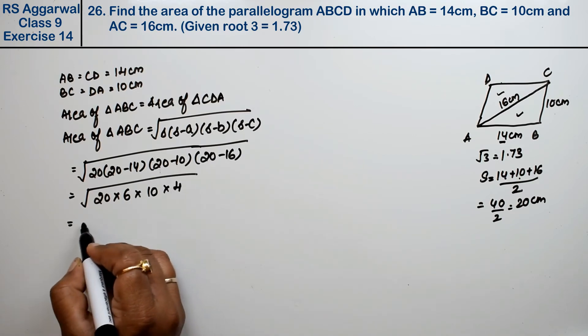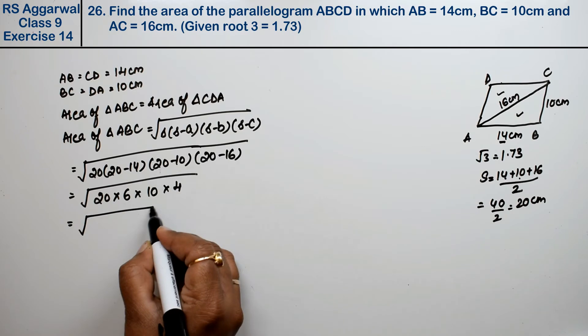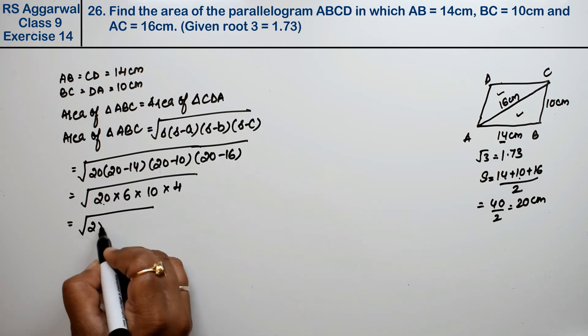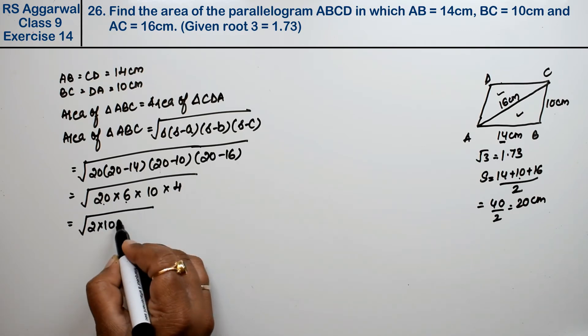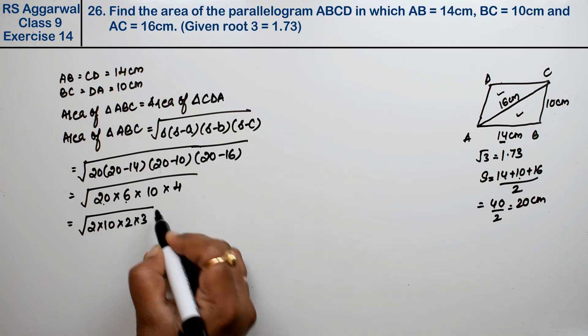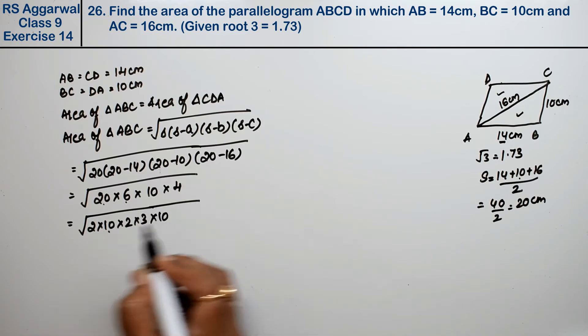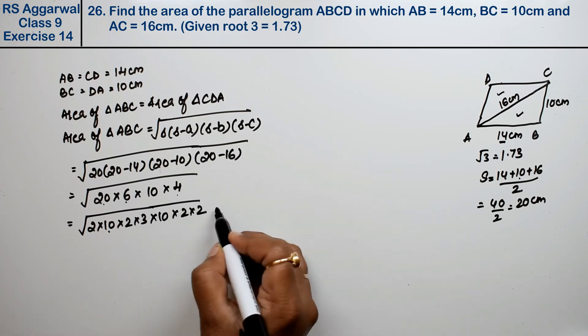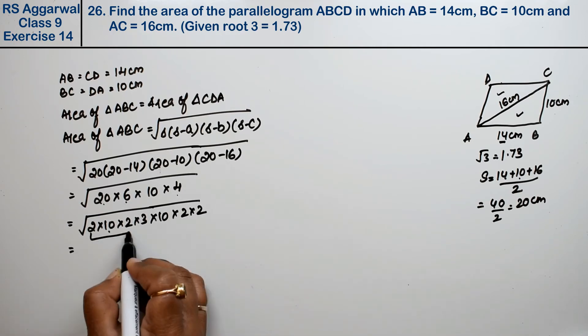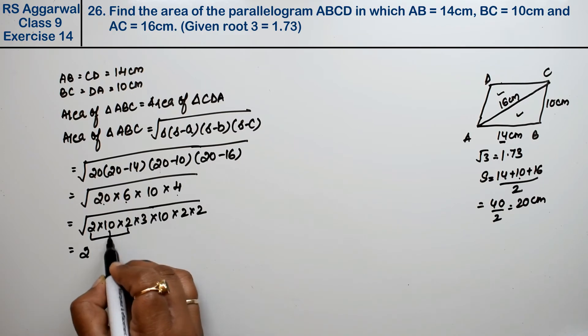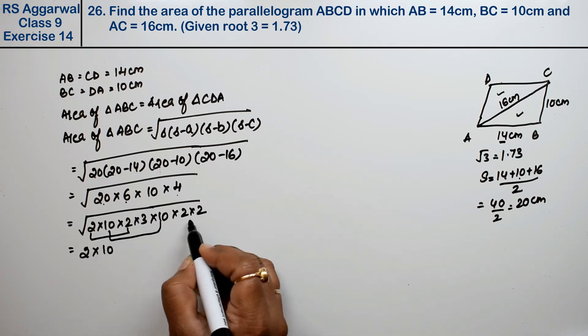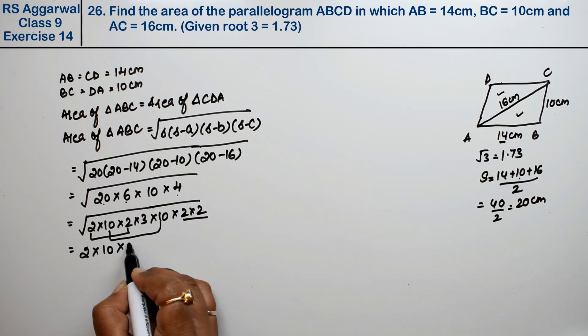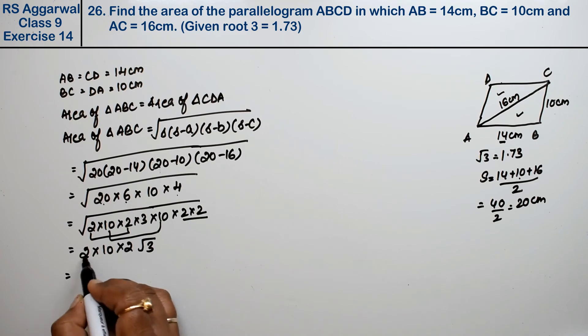Now we can write this as 2 into 10, 2 into 3 is 6, 10 as it is, and 4 is 2 into 2. We take out the pairs: 2 squared gives 2, 10 squared gives 10, 3 has no pair, 2 squared gives 2. So this becomes 40 root 3.